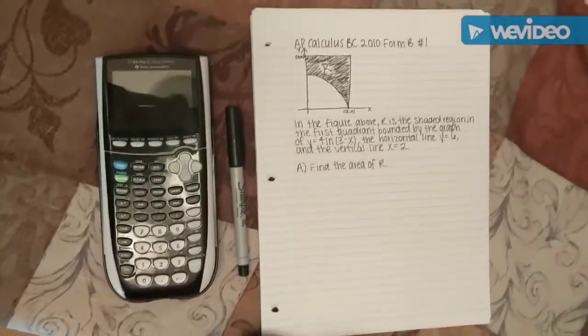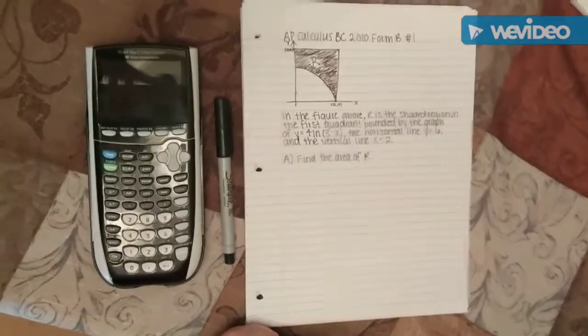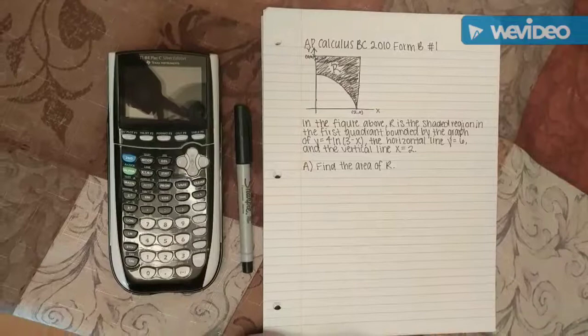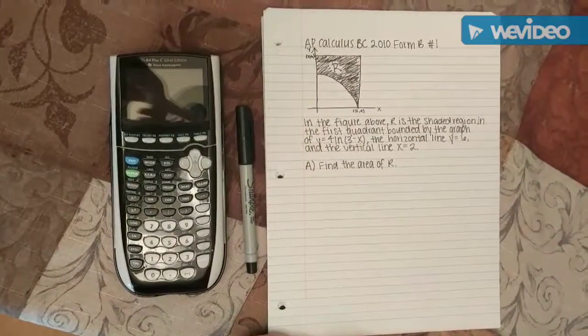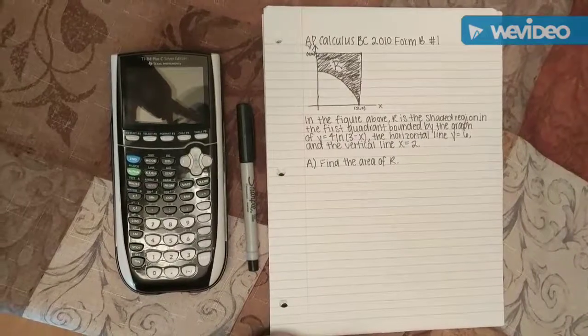This is the AP Calculus BC 2010 Form B, number one of the free response. In the figure above, R is a shaded region in the first quadrant bounded by the graph of y equals 4 times the natural log of 3 minus x, the horizontal line y equals 6, and the vertical line x equals 2.